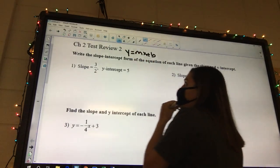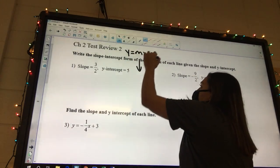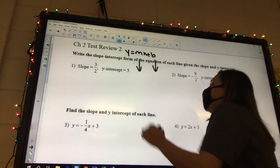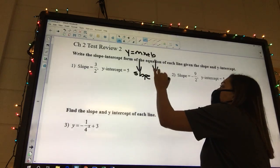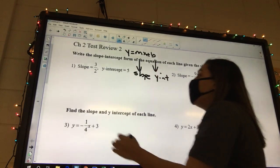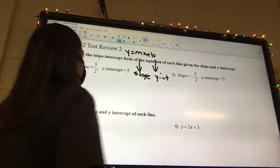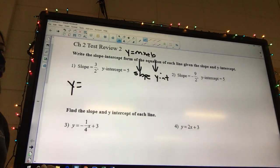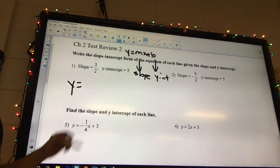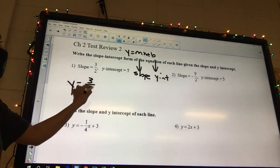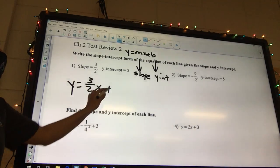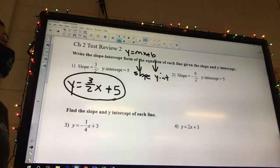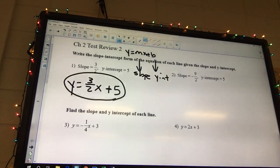What does our m stand for? Slope. Yeah, it's our slope. What about our b? Y-intercept. So y-intercept. So we're just going to write the equation out. Y equals, what's our m? 3 over 2x. What's our b? Plus 5. Okay, and that's it. That's all we're writing.